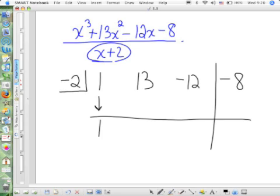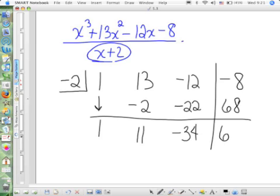Then you multiply, add, multiply, add, until you can't multiply, add anymore. Negative 2 times 1 is negative 2. Adding that column, I have 11. Negative 2 times 11 is negative 22. Adding that column, I have negative 34. Multiplying again, negative 2 times negative 34 is positive 68. Adding this column, this time I have a remainder of 60.